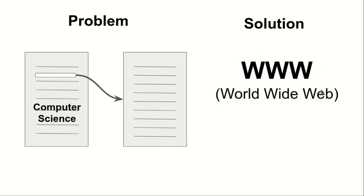So they created a solution called WWW — the World Wide Web. This solution allowed the user to have a reference link in any page, not just research pages. It was also responsible for saving the data of these pages. This was the purpose and solution of WWW.